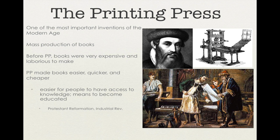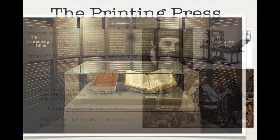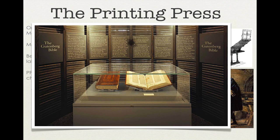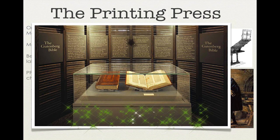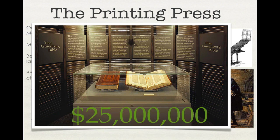The printing revolution also leads the way into the Industrial Revolution, which shaped the world we live in today. One of the first books to be mass-produced on Gutenberg's printing press was the Bible. And if you happen to have one of these extremely rare Gutenberg Bibles lying around your house, you might want to think about selling it — because if you did, you could make a cool 25 million dollars.